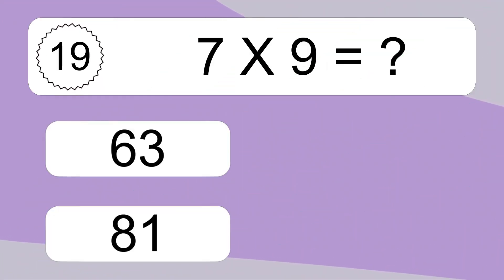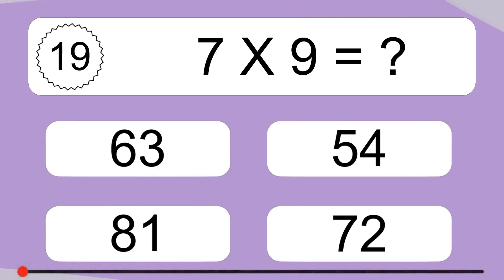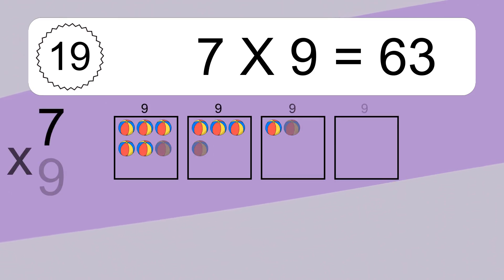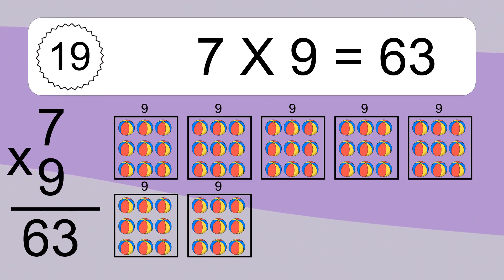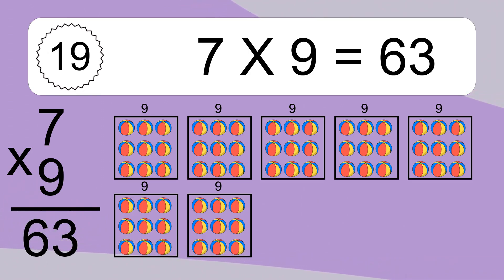7 times 9 equals what? 7 times 9 equals 63. We have 7 boxes, and each box has 9 colorful balls inside. If you count all the balls in all the boxes together, you will have 7 times 9 balls. This equals 63 balls.